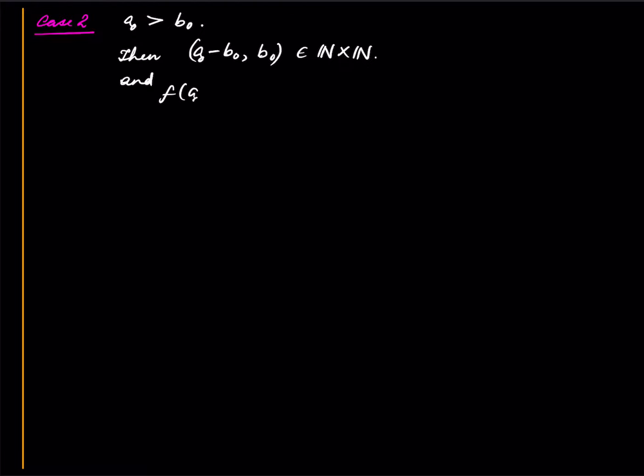Okay, so let's go to case two. Case two is that A0 is greater than B0. So here then, first of all, then A0 minus B0 comma B0 is actually in this set natural cross naturals.